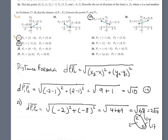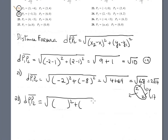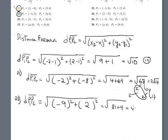Problem 23 is similar. Subtracting the first component: negative 3 minus 6 is negative 9. And the second component: subtracting 2 and 0 gives 2. So we have square root of 81 plus 4, which equals square root of 85.